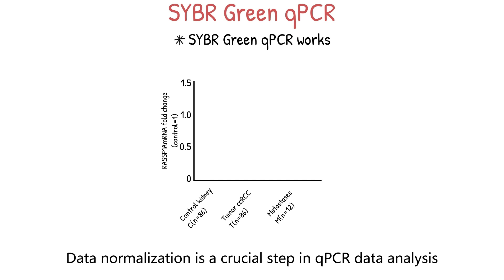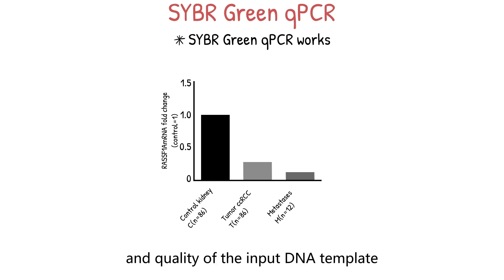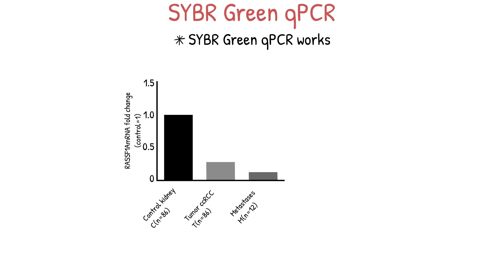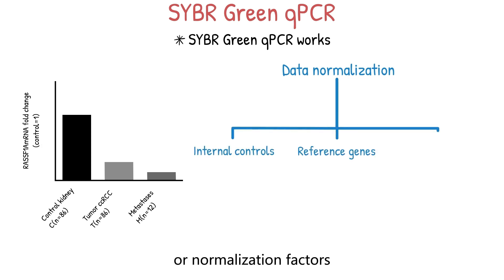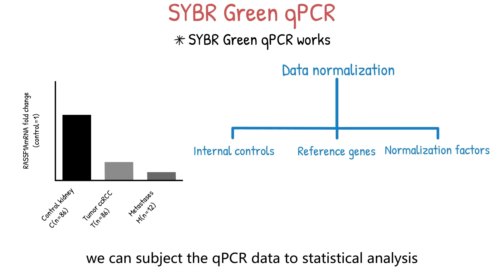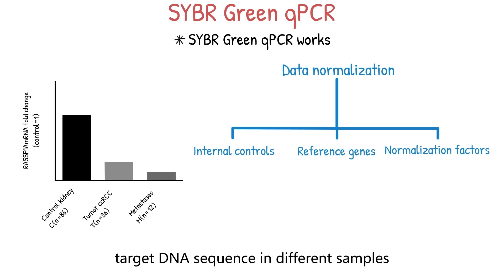Data normalization is a crucial step in qPCR data analysis. We use it to correct for variations in the amount and quality of the input DNA template and the efficiency of the PCR reaction. There are several methods for normalization, including the use of internal controls, reference genes, or normalization factors. Finally, we can subject the qPCR data to statistical analysis to determine the significance of the results and compare the relative abundance of the target DNA sequence in different samples.